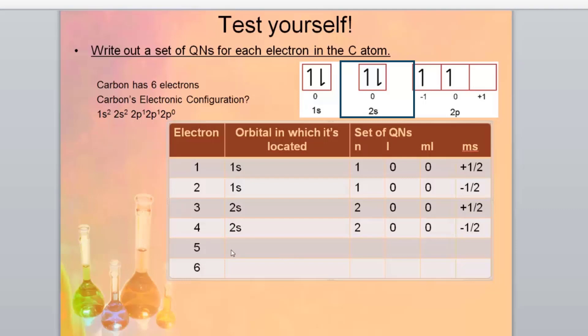It doesn't matter which order you put them in. Now with our last two, we've got a 2p and we've got a 2p here. So it's in our second energy level. It's a p orbital, so it's the one.